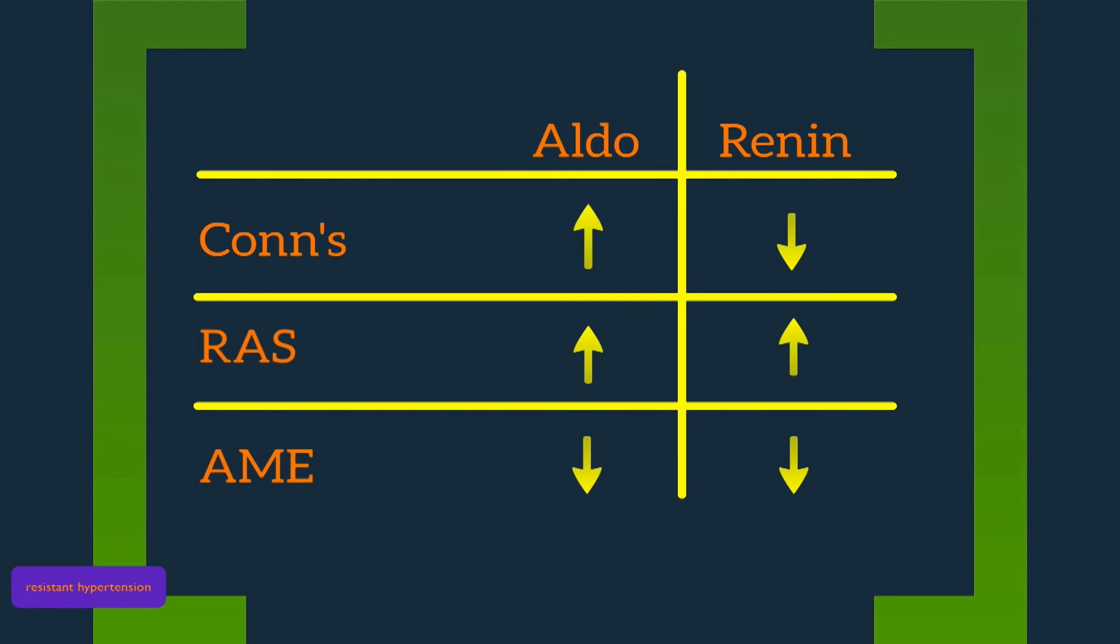So to go back to the top in terms of how to work this up, if the patient has hypertension and hypokalemia, you've ruled out white coat hypertension, you've also ruled out other causes of hypertension, including sodium intake, NSAIDs, and OSA, you enter into the algorithm of secondary hypertension.